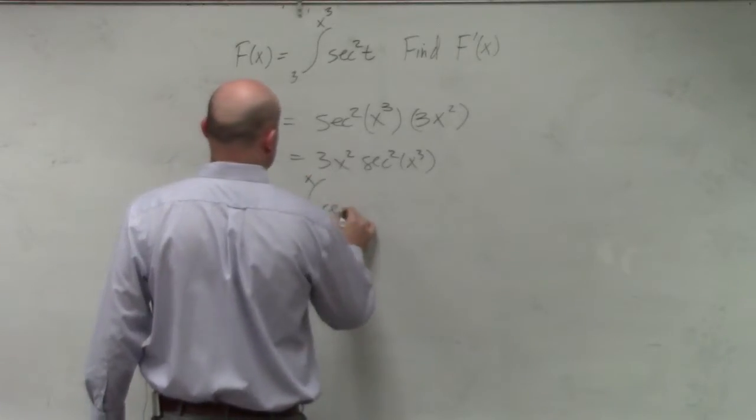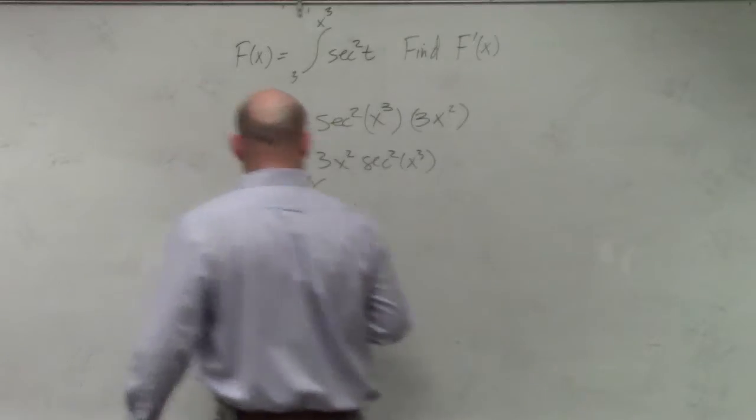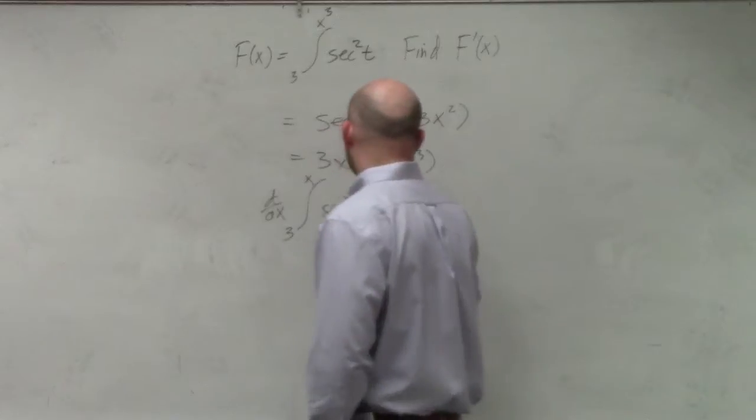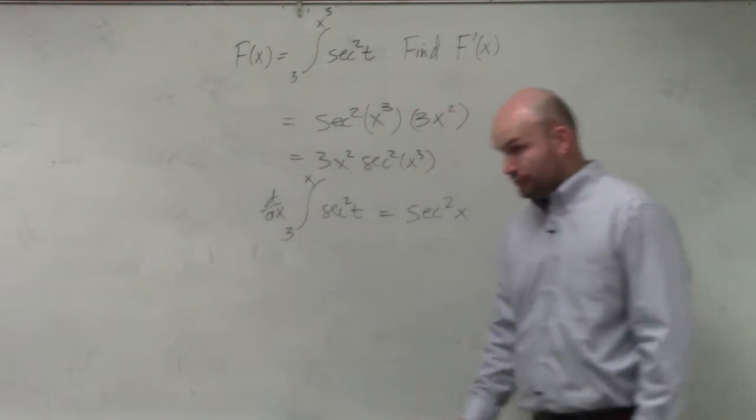So if I did this, if I said 3 over to x of that, secant squared, then we know that the answer would just be secant squared of x. Do you agree? Do you agree with me?